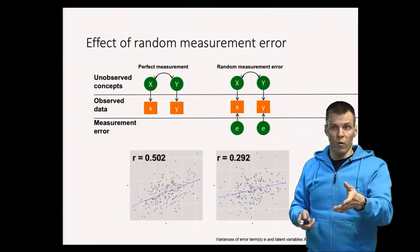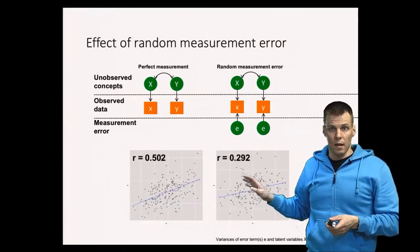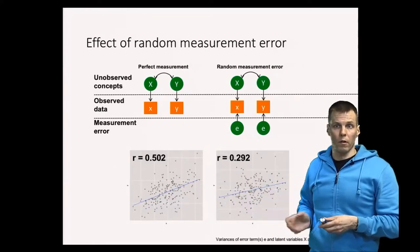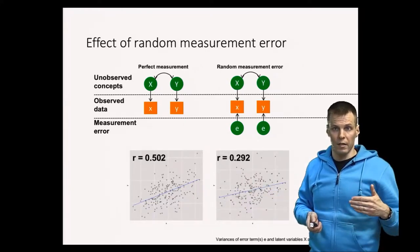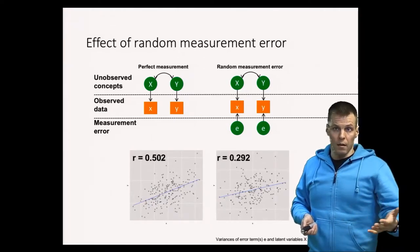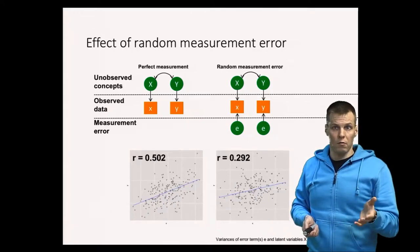So that can also happen, but generally this attenuation happens when all variables are unreliable. Then all regression coefficients will be slightly underestimated, and you have to understand that and then discuss what it means for your particular research result.